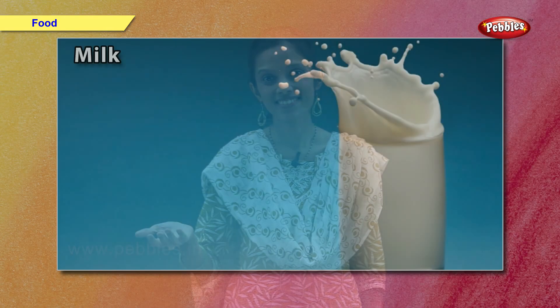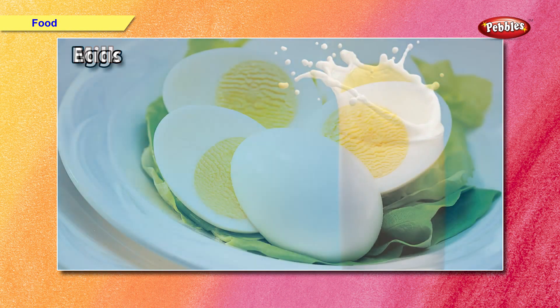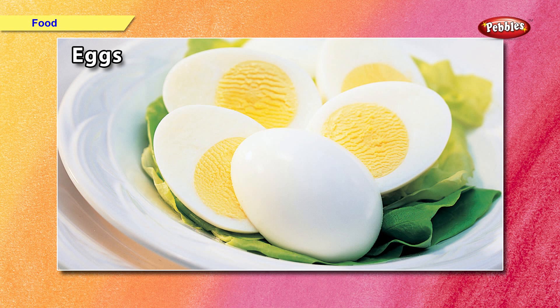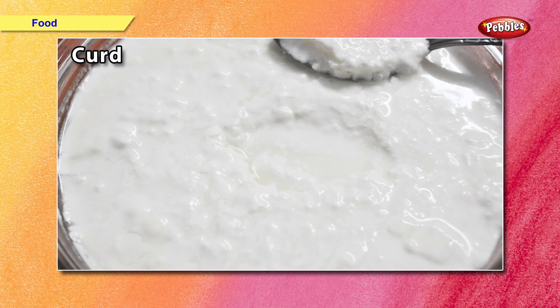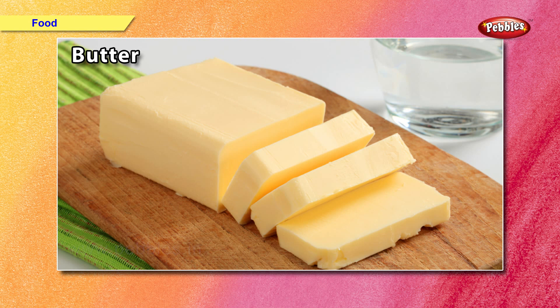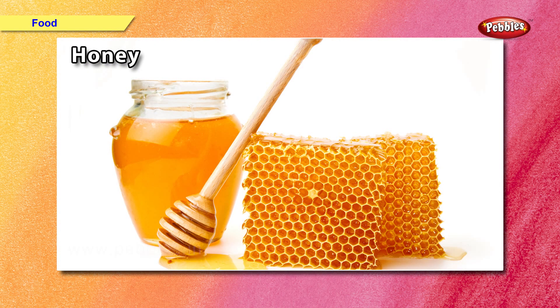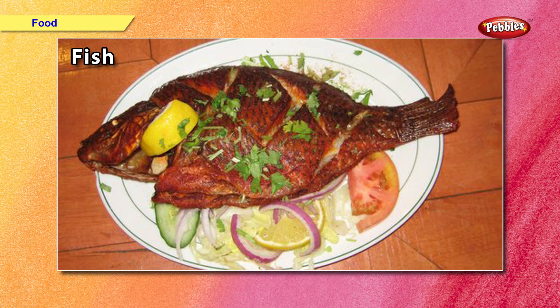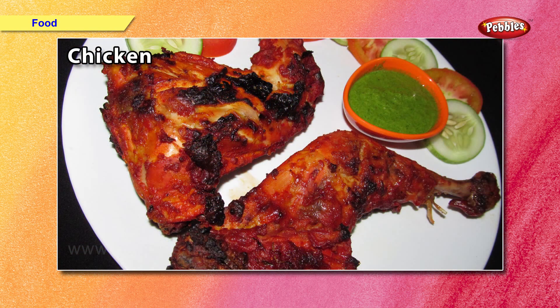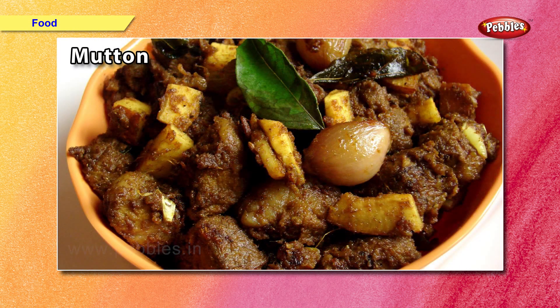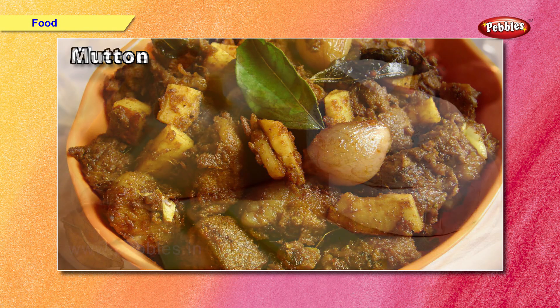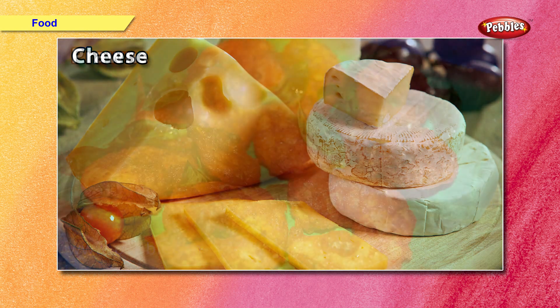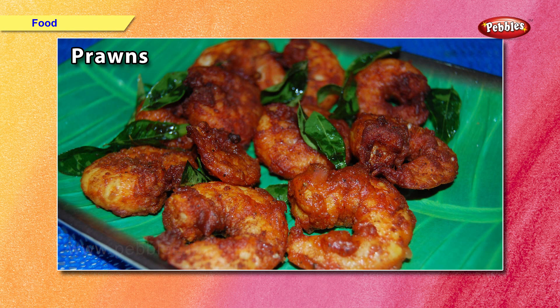Now, let us have a look at some of the examples of food that we get from animals. Let us see some examples of animal products: egg, butter.